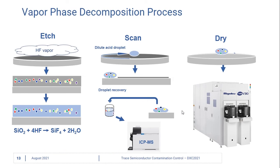Vapor phase decomposition is a wafer surface sampling technique in which the wafer is exposed to hydrofluoric acid vapor. This vapor dissolves the oxide layer on the wafer surface. After the oxide is decomposed, what's left on the wafer is water and the trace metal contamination that was in the oxide layer.